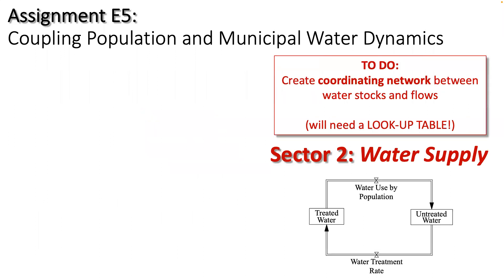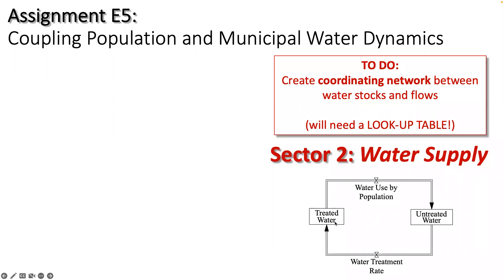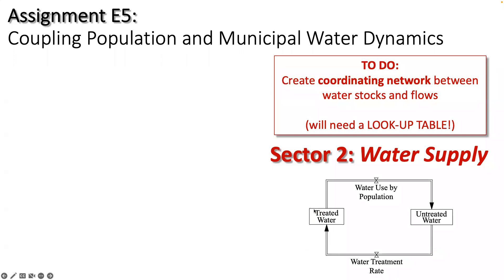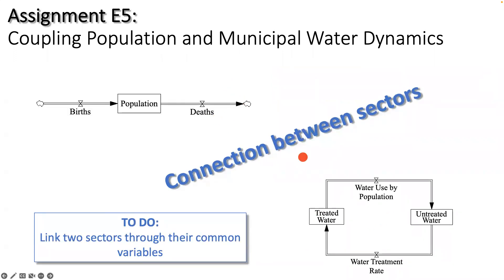Then we'll have a second sector — the water supply — with two stocks: treated water and untreated water. As the population uses water, it gets converted from one stock to the other, and then there's a rate at which it gets treated to come back. In real cities the process is more complex with ecological processes, but we're simplifying by saying water never disappears in this system — it just becomes unusable and then becomes usable again after treatment. Then we'll create a connection between these sectors in the assignment.